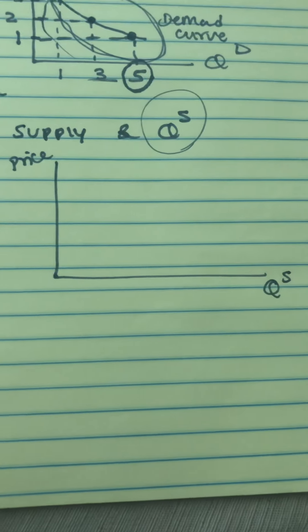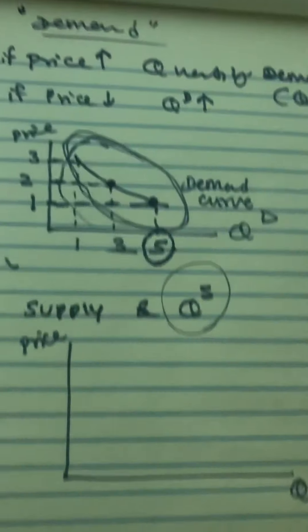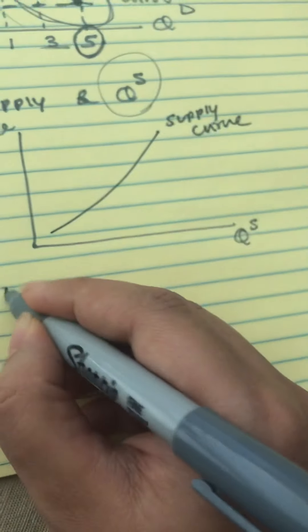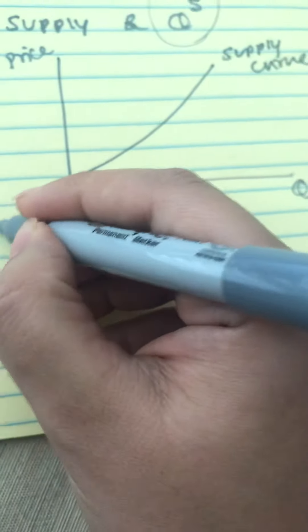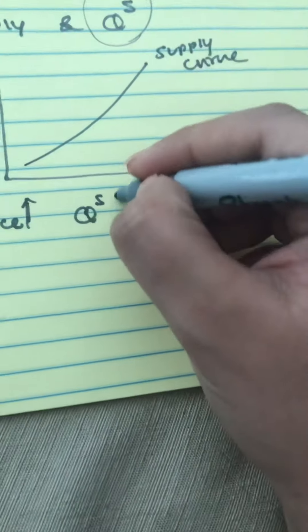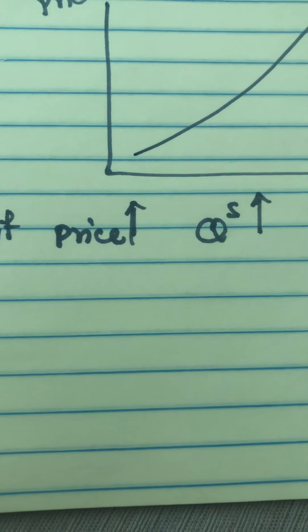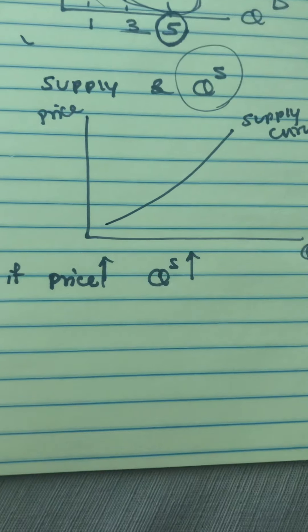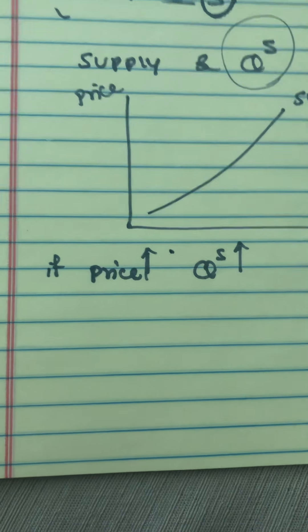Quantity supplied is the amount of goods and services that all sellers sell in the market. Unlike demand, our supply curve is upward sloping, because there is a positive relationship between price and the amount sellers sell. To understand supply, forget about the demand side completely — think of yourself as a seller or producer in the market.